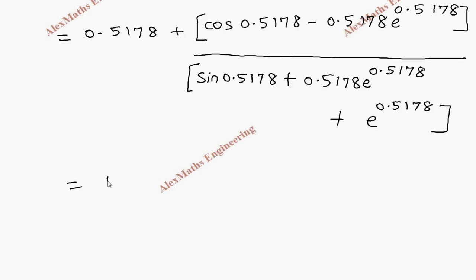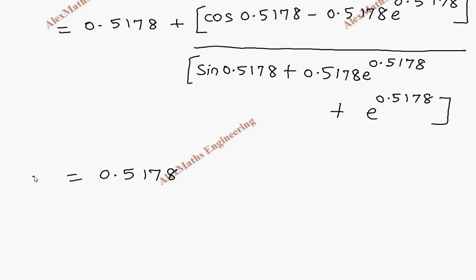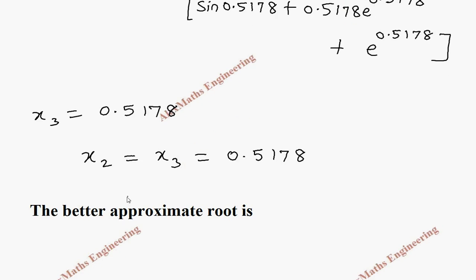Since x2 and x3 are both equal to 0.5178, we have convergence. Therefore, the better approximate root of the equation cos(x) = x·e^x is 0.5178.